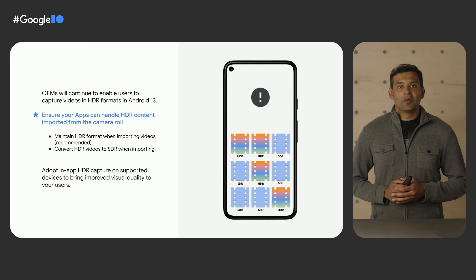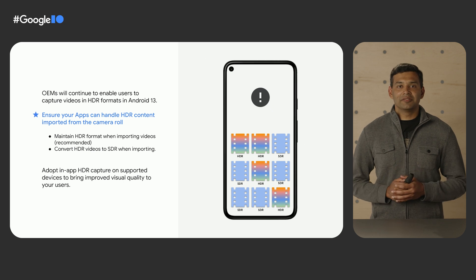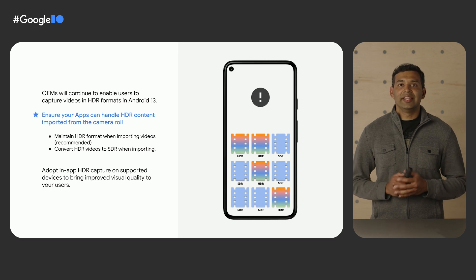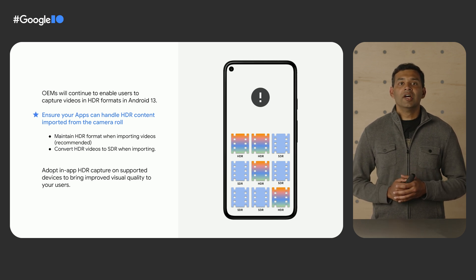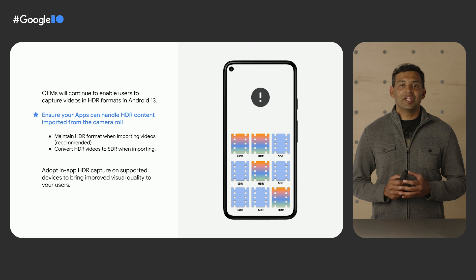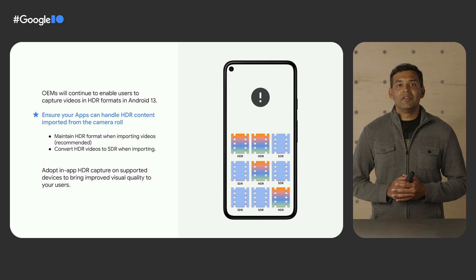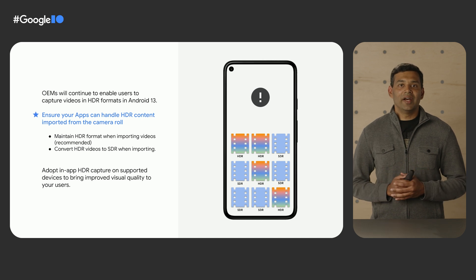We expect more and more OEMs to offer HDR video capture support in their native camera app due to the growing popularity of HDR videos. Hence, it is important to ensure your apps are well tested to ingest HDR content present in the user's video gallery. We recommend your app pipelines are updated to support 10-bit HDR content to maintain HDR quality, or use the transformer APIs that will be added to the Media 3 Jetpack library to properly tone map HDR videos to SDR for handling by your app. We also recommend apps that support capture use cases to take advantage of HDR capture on supported devices to capture and share content in HDR to improve the user experience.